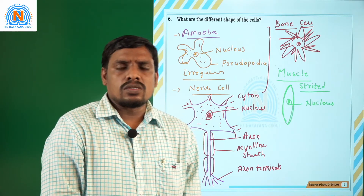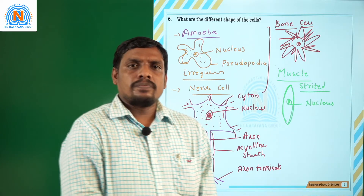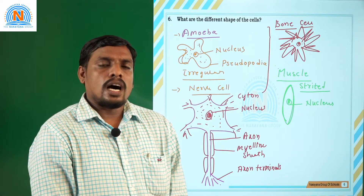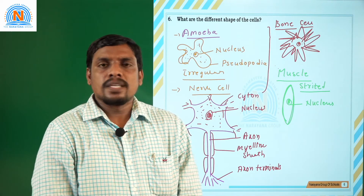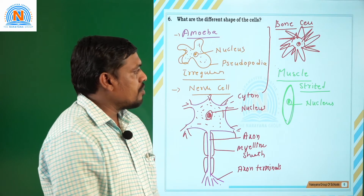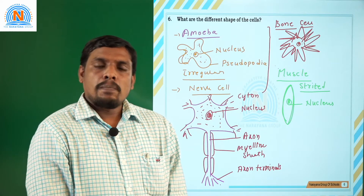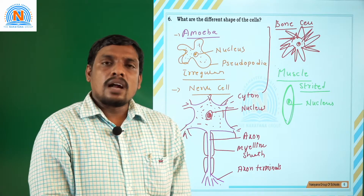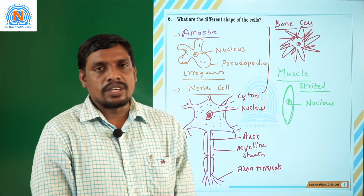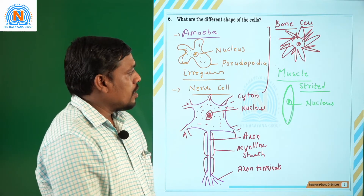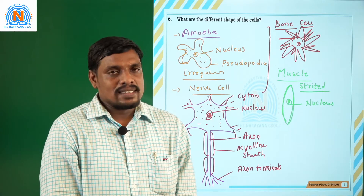Blood cells are also seen and have different shapes. Take an RBC — it generally has a biconcave or round-shaped structure. Even plant cells have different shapes and are made up of certain cell organelles. So there is great diversity seen in cells and their structures.